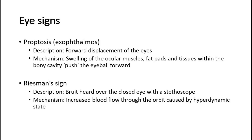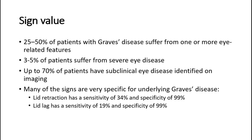Reisman's sign is described as a bruit heard over the closed eye with a stethoscope, due to increased blood flow through the orbit caused by a hyperdynamic state. Regarding the sign value of these eye signs: 25 to 50 percent of patients with Graves' disease suffer from one or more eye-related features, 3 to 5 percent suffer from severe eye disease, and up to 70 percent have subclinical eye disease identified on imaging. Many signs are very specific for underlying Graves' disease, such as lid retraction and lid lag. Lid retraction has a sensitivity of 34 percent and specificity of 99 percent, whereas lid lag has a sensitivity of 19 percent and specificity of 99 percent.